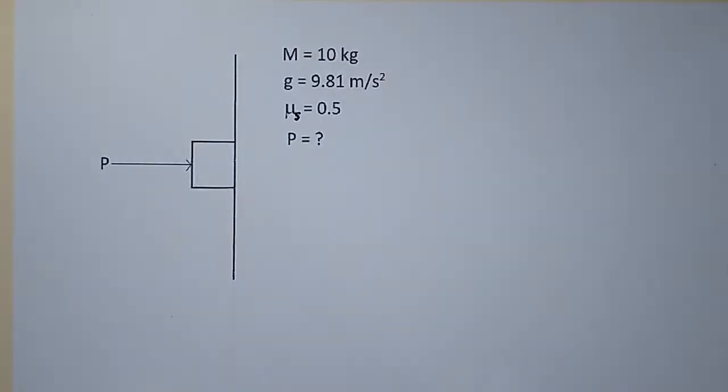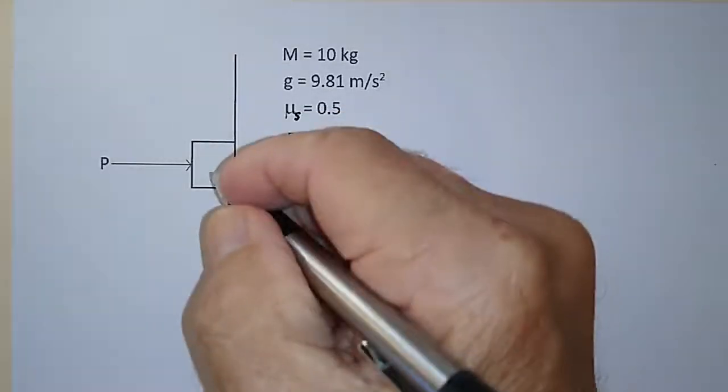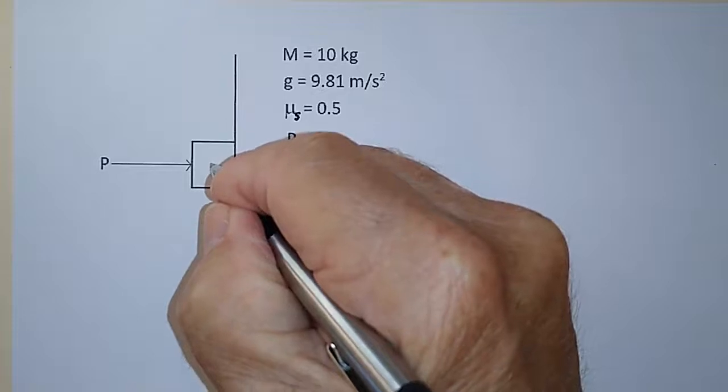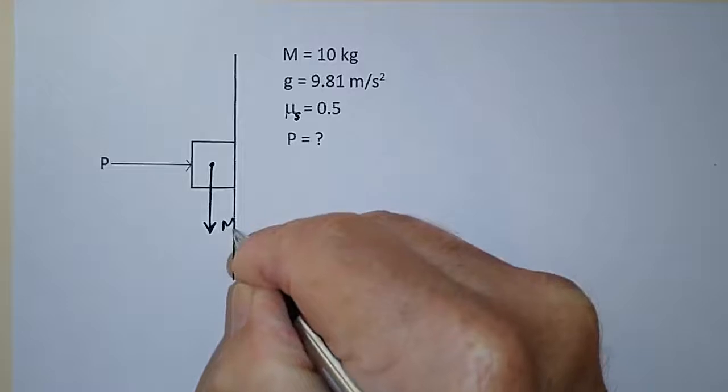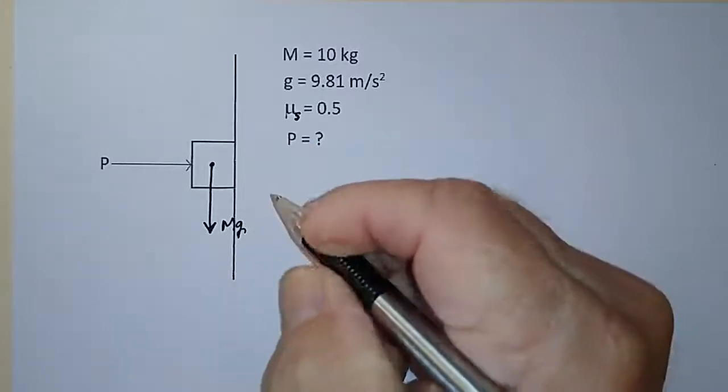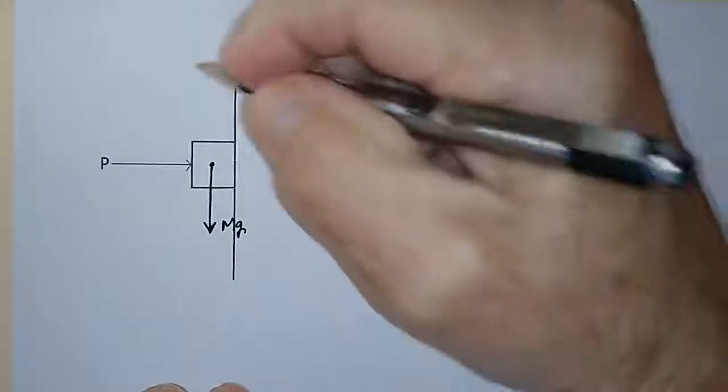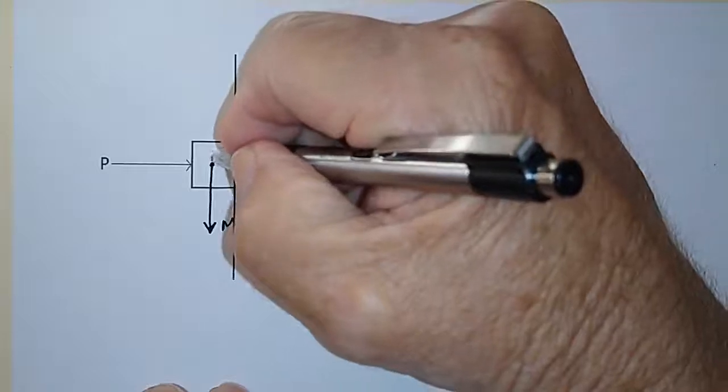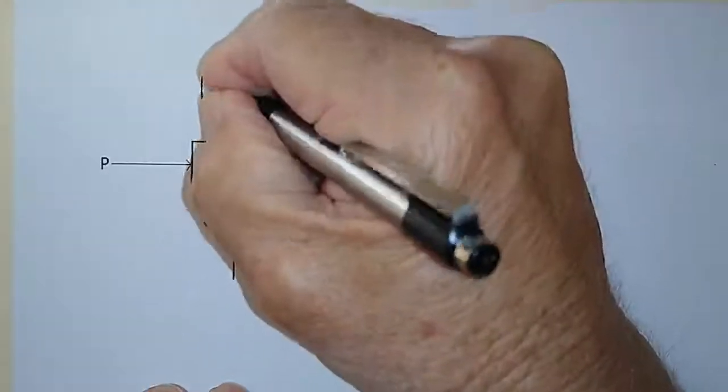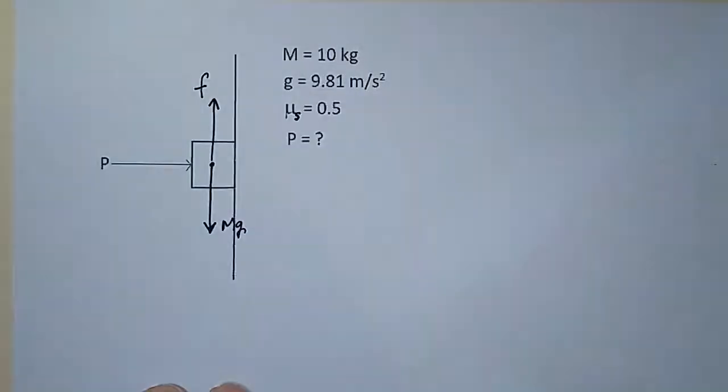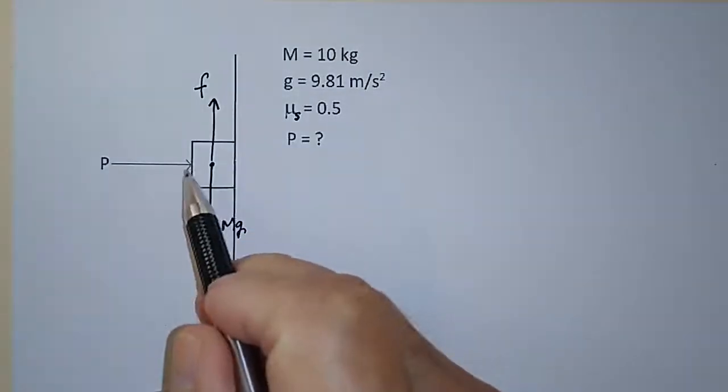The way to work this problem, let's look at the forces acting on the box. This one right here is mg, the weight, and the force acting in this direction is F, the frictional force, and this is the force P pushing on the box.